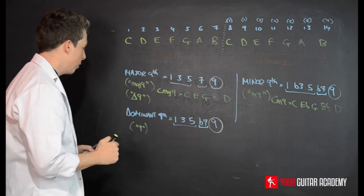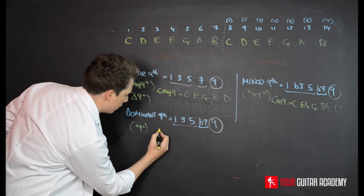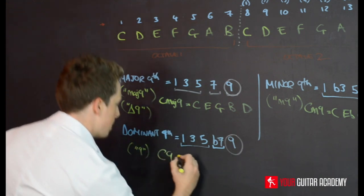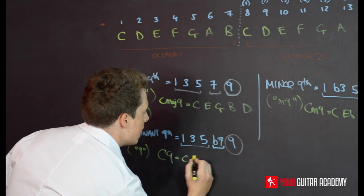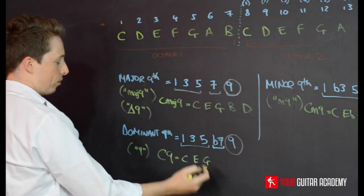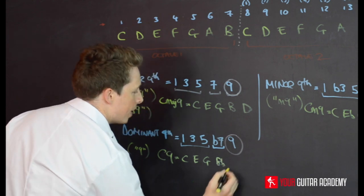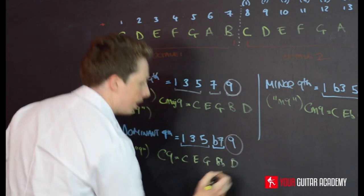So, let's write it out. So, we're going to do a C9. So, C dominant 9. That's how it would be written, kind of, shorthand. And it would simply be C, E, G. That's your 1, 3, 5. Then, we'd have a B flat, which is the flat 7, and then the D.